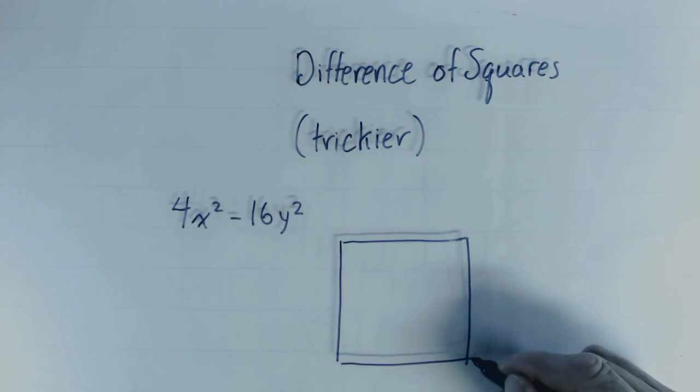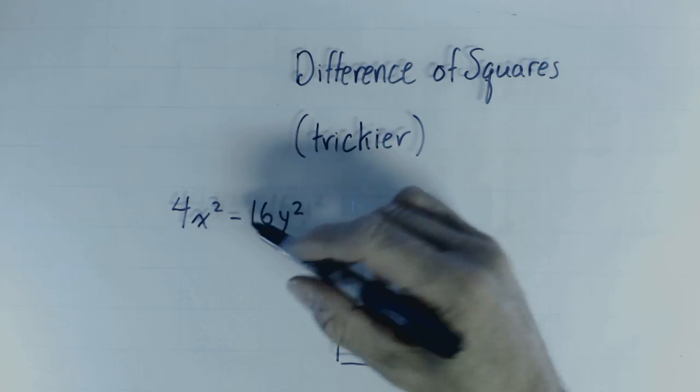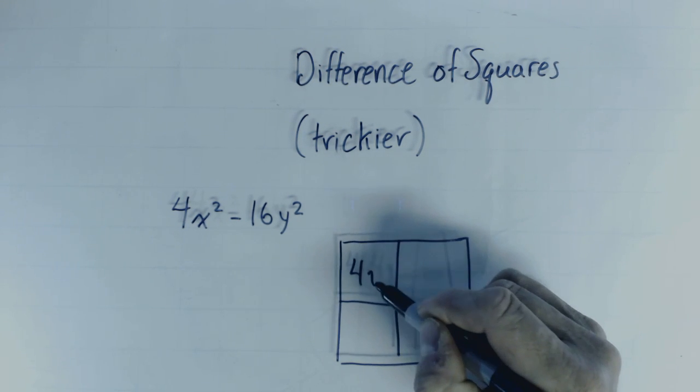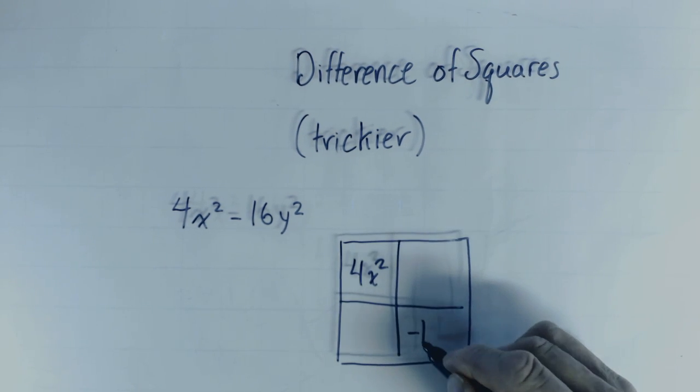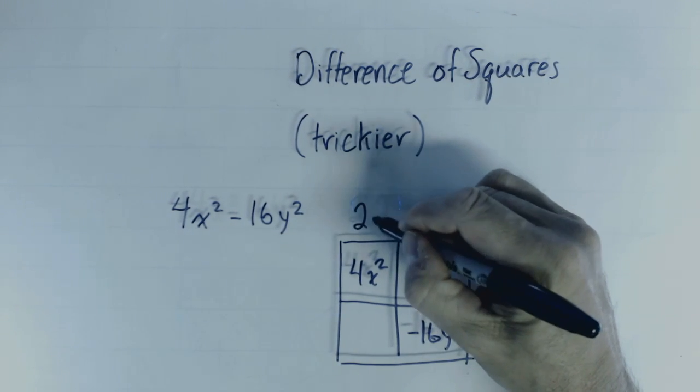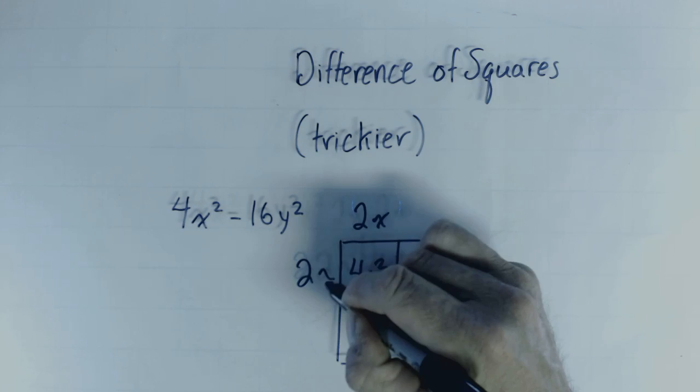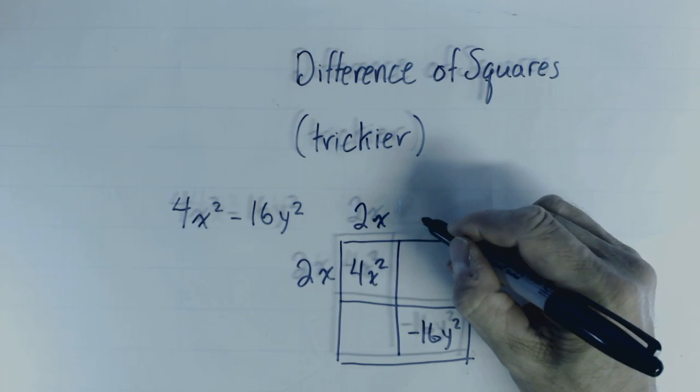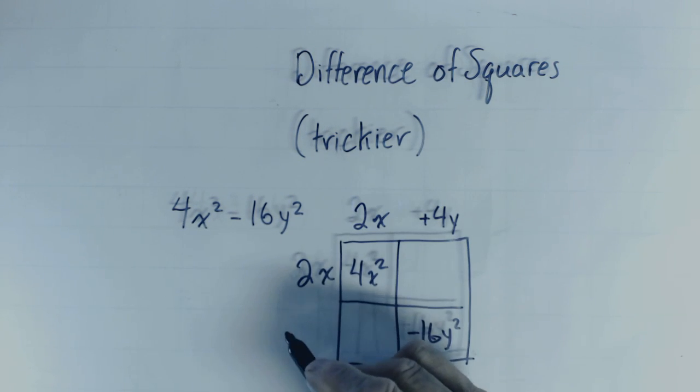You can see that in this square there's a 4x squared, and in this square there's a minus 16y squared. So 2x and 2x goes in this box, and plus 4y minus 4y. It wouldn't matter actually what order these things would be done in.